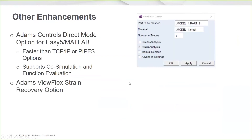Within Adams View, the Adams View Flex dialogue has a new option to allow strain recovery. Adams View Flex creates a modal neutral file — the flexible body representation — on the fly from within Adams View. For the number of years we've had this, we've had the ability to do modal stress recovery on MNFs created from Adams View Flex. We've now added the option to also allow for strain recovery.